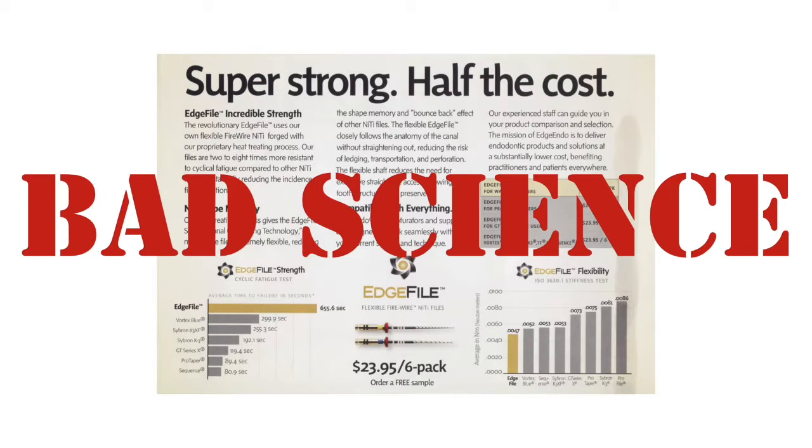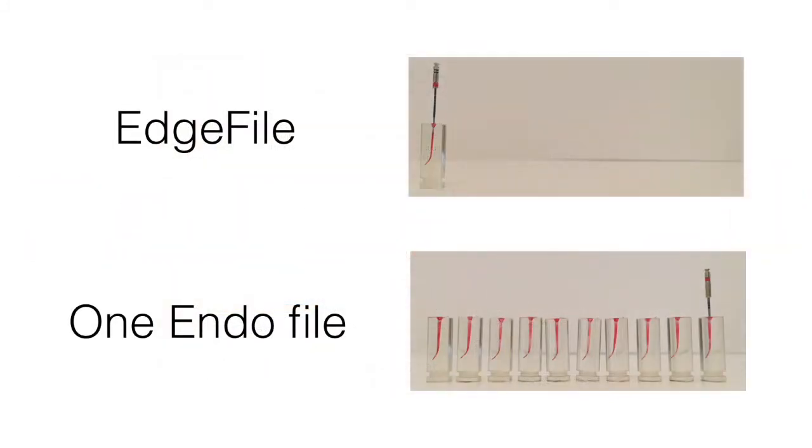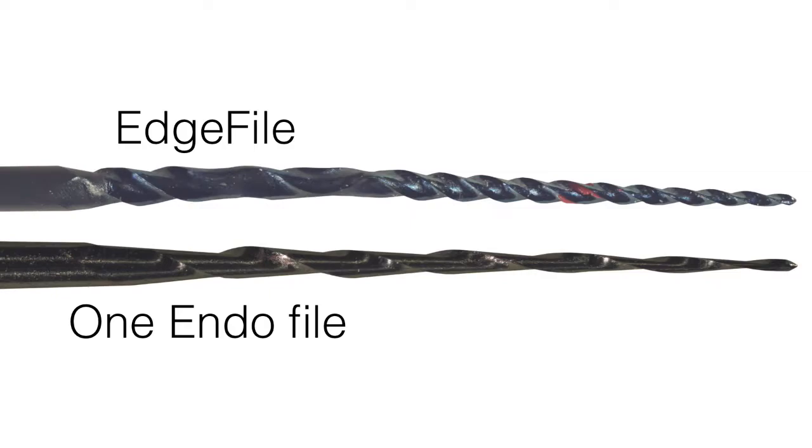Clearly, they'd like us to note their file's flexibility and resistance to cyclic fatigue. But using an alternative means for comparison, the Edge file failed to prepare even a single practice block without distorting, while the One Endo file prepared 10 such blocks under identical conditions without showing any signs of distortion or degradation in performance.